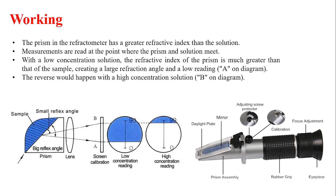Now let us see the working of refractometer. A refractometer constitutes a prism. The prism in the refractometer has a greater refractive index than the solution we are going to examine. Measurements are read at the point where prism and solution meet. With a low concentration solution, the refractive index of the prism is much greater than that of the sample, creating a large refraction and a low reading.